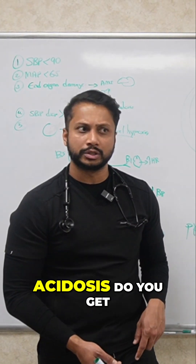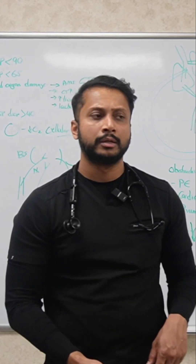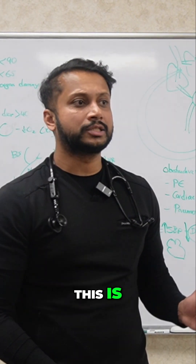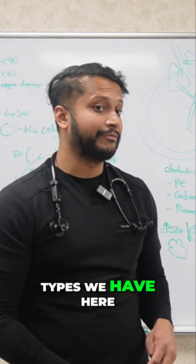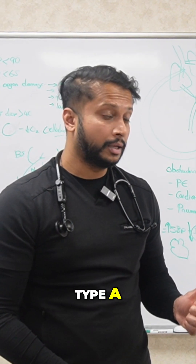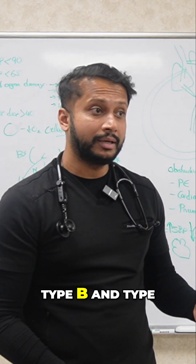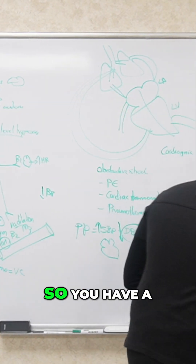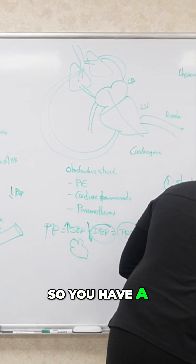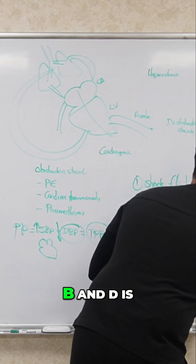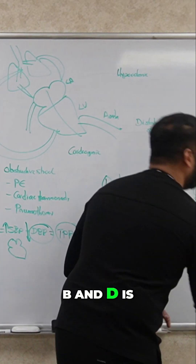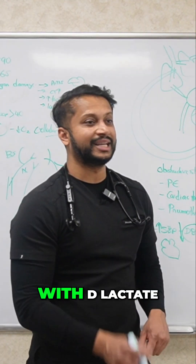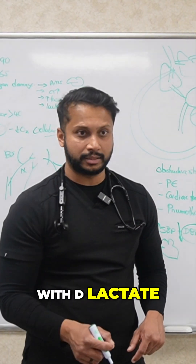What type of lactic acidosis do you get? There are types A, type B, and then there's D-lactate — it's not type D, but it relates to D-lactate.